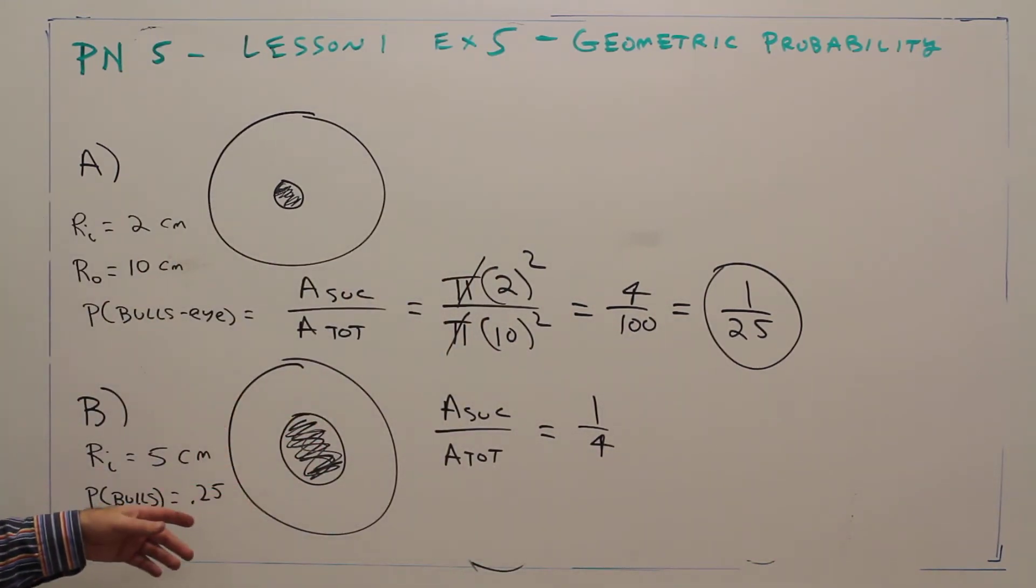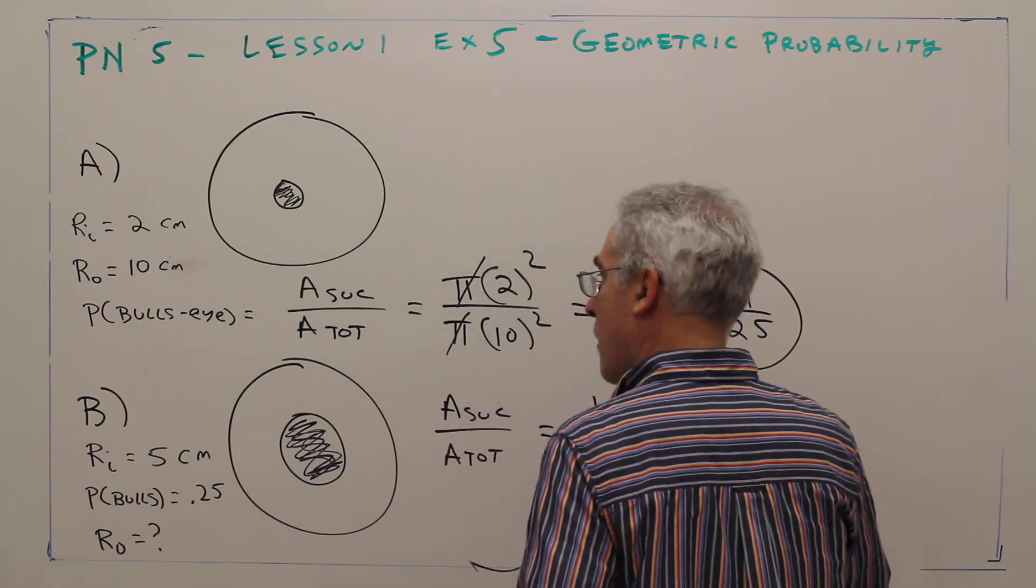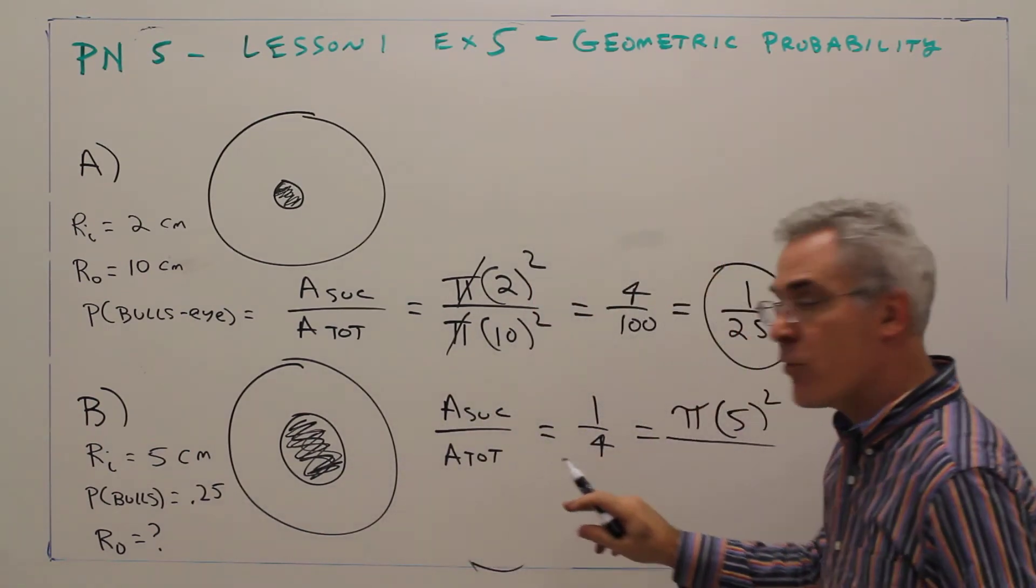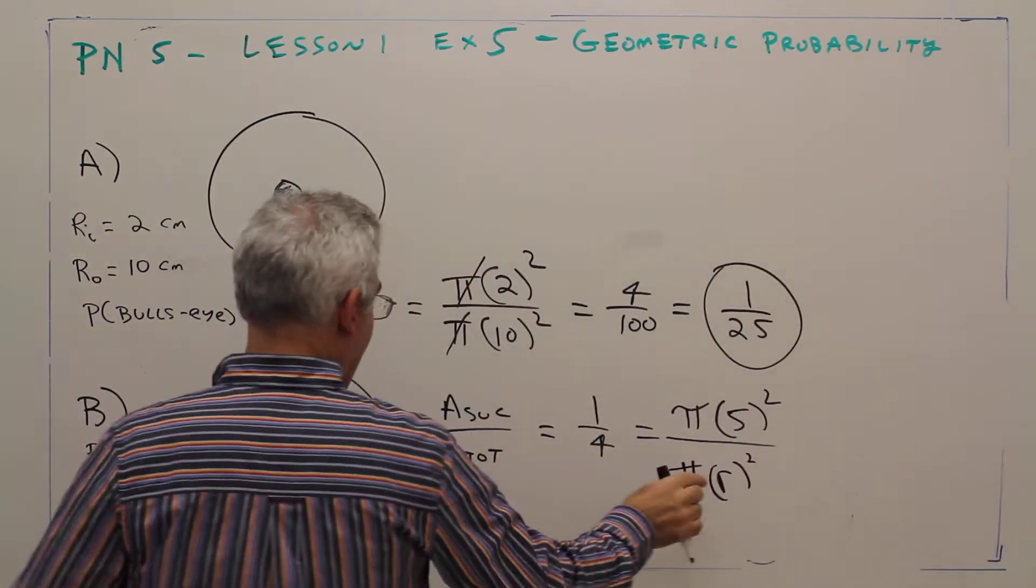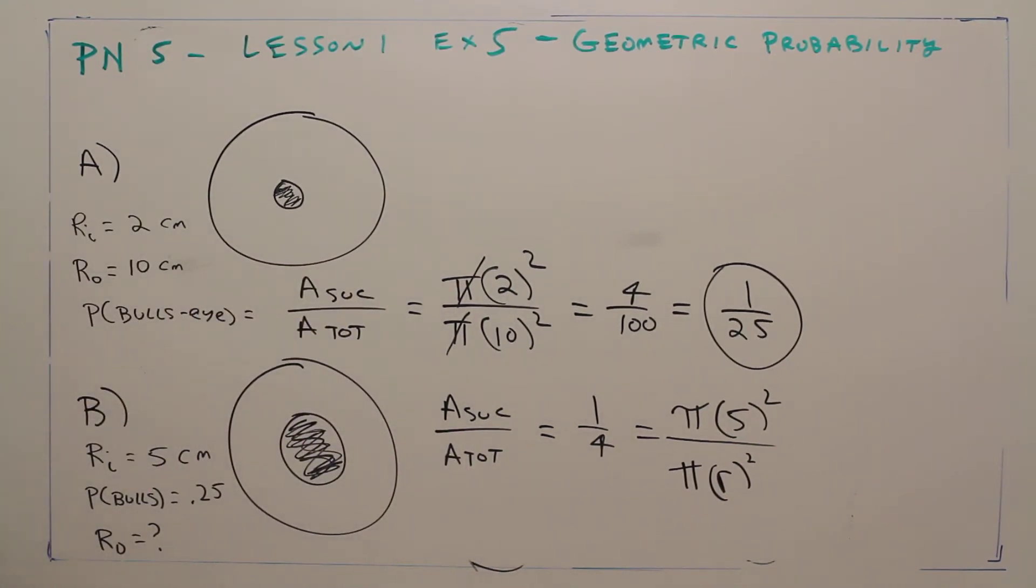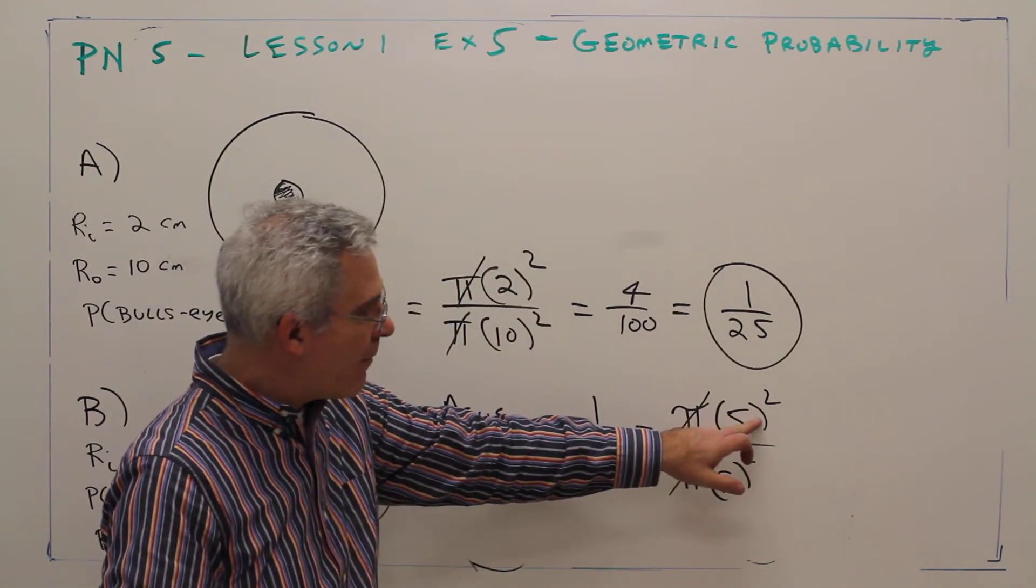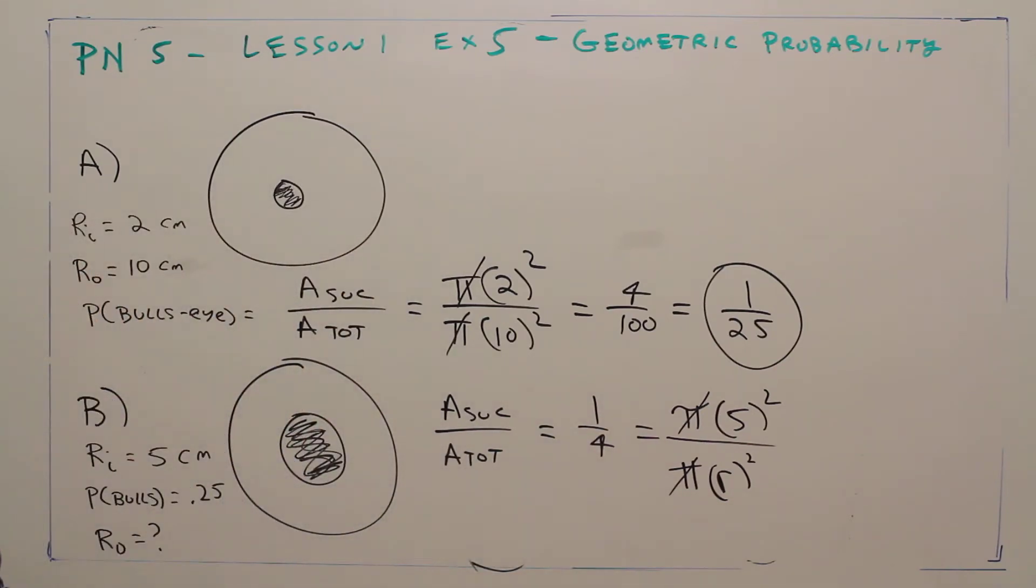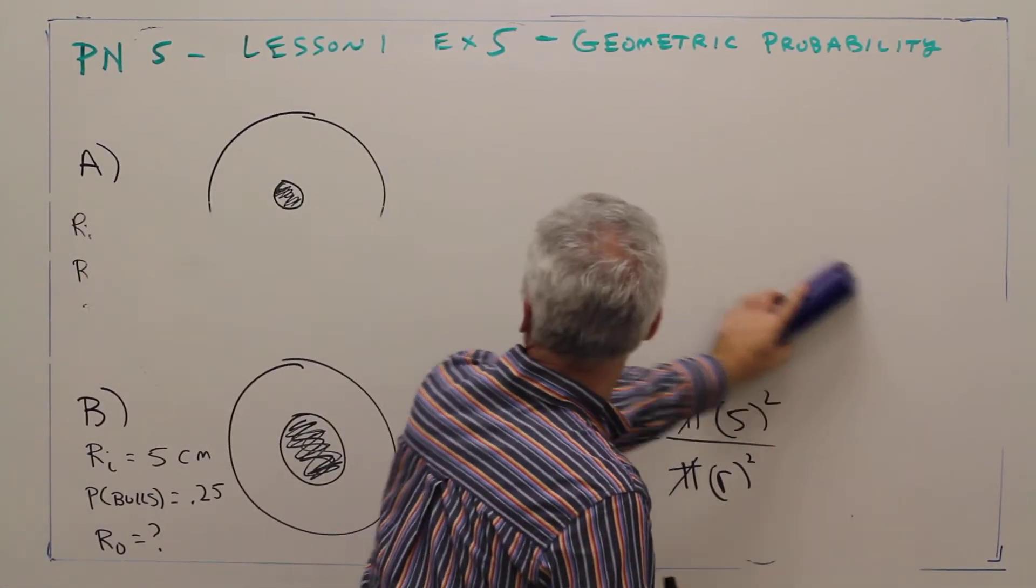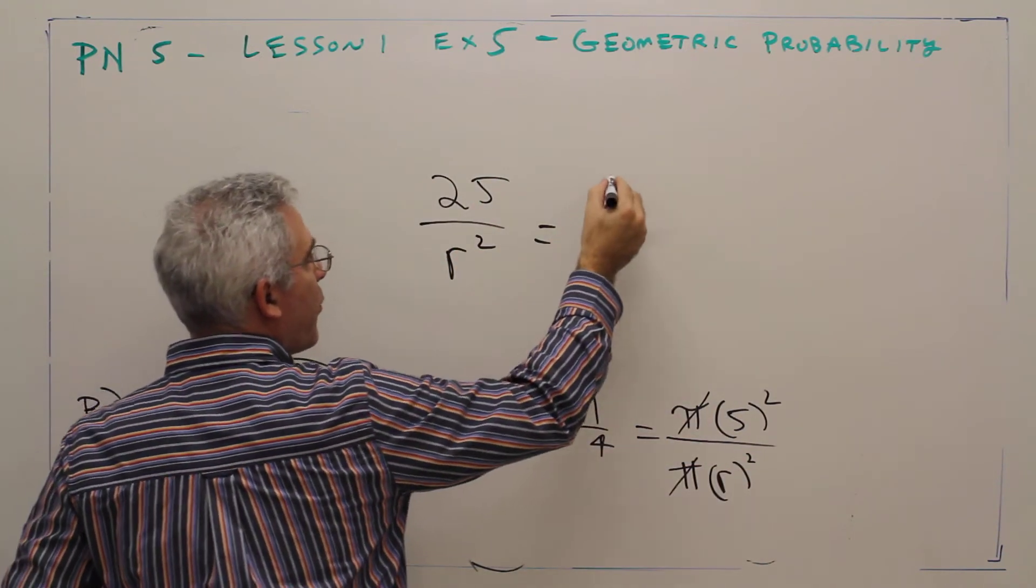The area of success is going to be pi times five squared. And the area total is pi times r squared. I'll be solving for r—r represents the outer radius. Once again, the pi's conveniently cancel. So I'm going to get twenty-five over r squared equals one over four.